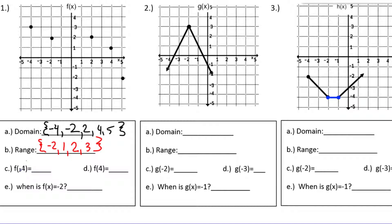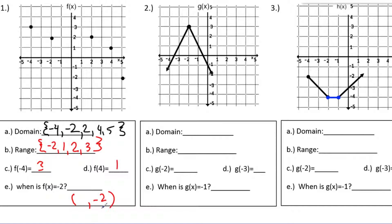For f of negative 4, we're saying negative 4 is the x input, so there's a point negative 4 comma something. Going over to negative 4 on the graph, the point is negative 4 comma 3, so f of negative 4 equals 3. For f of 4, similarly, the point is 4 comma 1, so f of 4 is 1. Letter e is different — it says the output is negative 2, asking what x gives that output. Going to negative 2 on the y-axis, the x value is 5, so x equals 5.